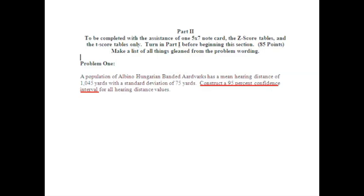Some of you will recognize this sheet here. This is a sample quiz that was posted out on the document sharing section. It is to be completed with the assistance of a note card. In problem one, it states a sample of albino-Hungarian banded aardvarks has a mean hearing distance of 1,045 yards with a standard deviation of 75 yards. Construct a 95% confidence interval for all hearing distance values.